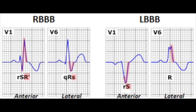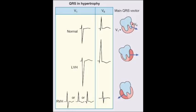For right bundle branch block: also a wide QRS (over 0.12s), RSR' pattern in V1 and V2 (classic bunny ears appearance), and a wide S wave in V6. Also look for ventricular hypertrophy: for RVH, check V1 — R greater than S in V1 or R greater than 7mm. For LVH, use Sokolow-Lyon or Cornell criteria. Pathologic Q waves (prior infarct) are greater than one box in depth or width.